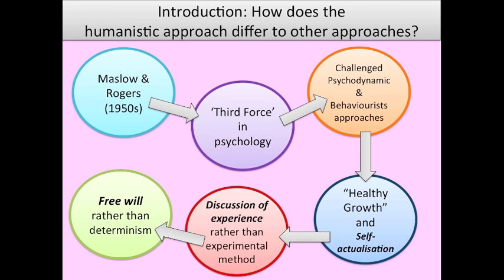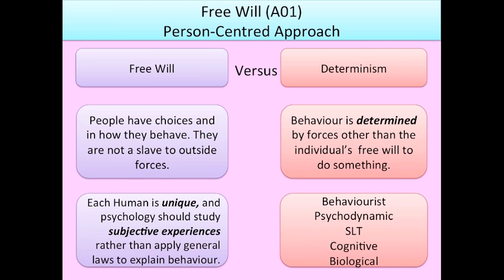The humanistic approach focuses on free will and personal responsibility rather than assuming someone's behaviour is determined by biological or external forces. Humanistic psychology says that each individual has the free will to make choices on how they behave as an adult and that people are not a slave to outside forces. This is in complete opposition to the deterministic approach, which says that your behaviour is determined by internal or external forces other than your own free will. For example, the psychodynamic approach says your behaviour as an adult is determined by your unconscious, built up from childhood experiences and your relationship with your parents. But the humanistic approach rejects that — you may be affected by outside forces, but you still have free will to make your choices and should take personal responsibility.